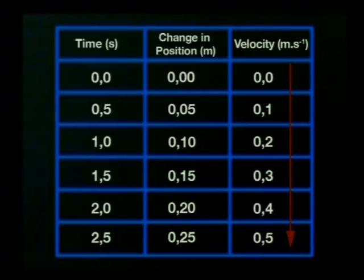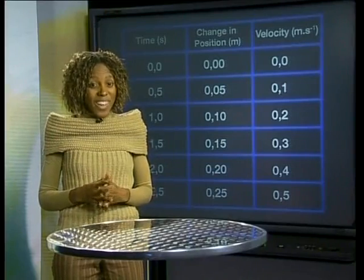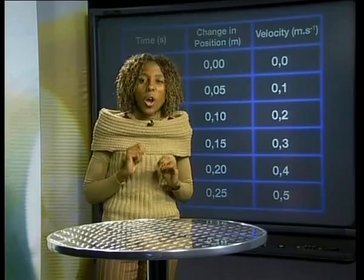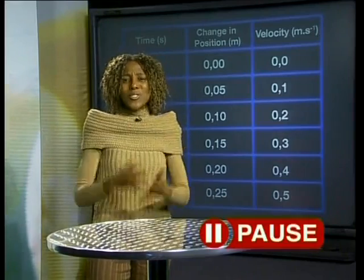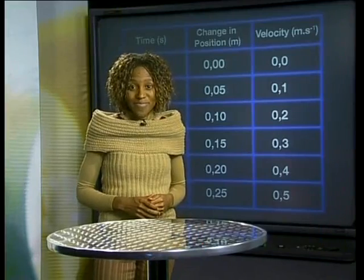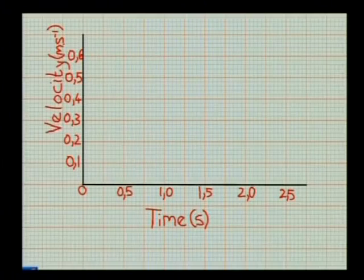We also used the data about the velocity in each of the time intervals to show that the velocity was increasing in a uniform way. Do you think a graph can help us to find out how the velocity changed? The position-time graph is not very helpful here. We need to plot a velocity-time graph if we want to find out how the velocity changed with time. Why don't you try drawing a sketch graph using the values of velocity from the table of data? Have a look at the graph I have drawn and compare it to yours. In this graph, time is placed on the horizontal axis and velocity on the vertical axis.